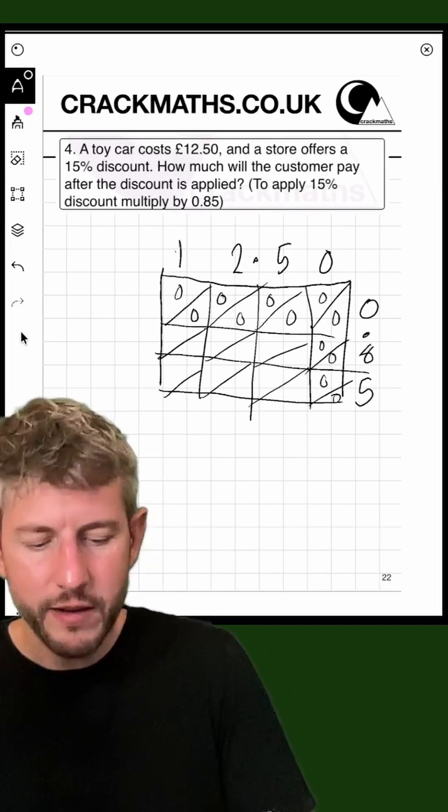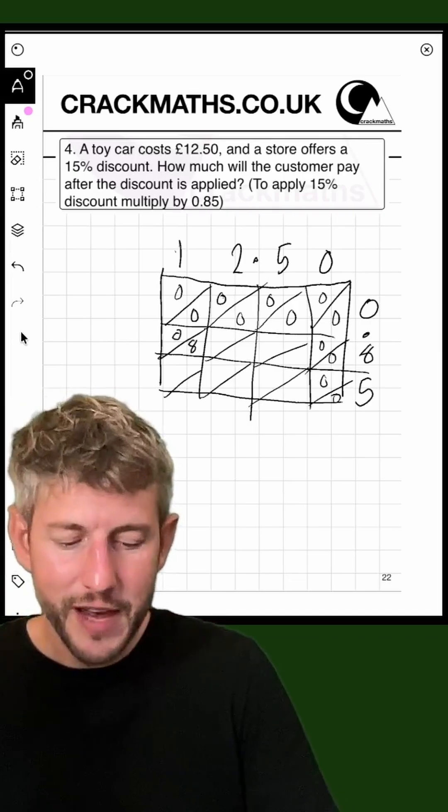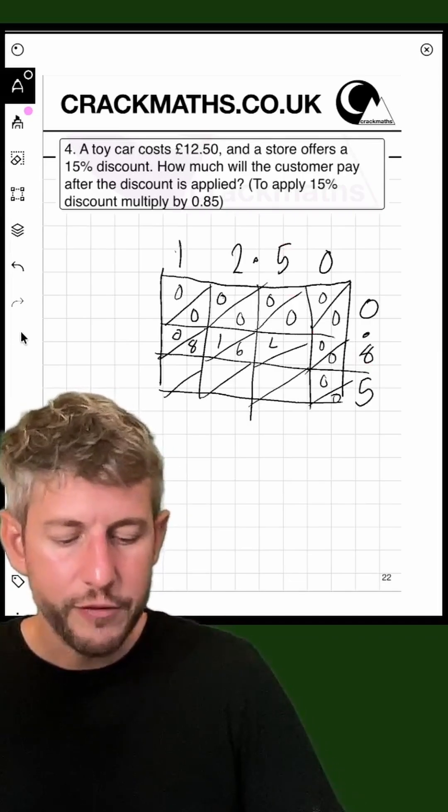Next, we've got 1 times 8, which is 08. Then I've got 2 times 8, which is 16. Then I've got 5 times 8, which is 40.